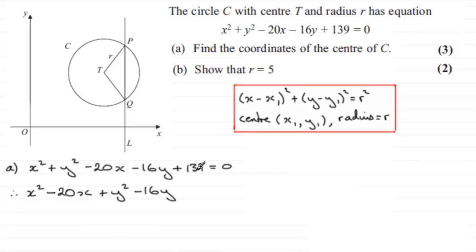So we've got that. It's up to you whether you keep the 139 here or take it to the other side. It doesn't really matter. I'm going to subtract 139 from both sides. You'll either do it now or later anyway in the question, so it doesn't really matter.